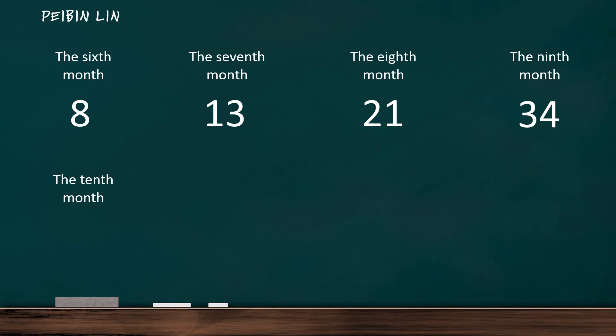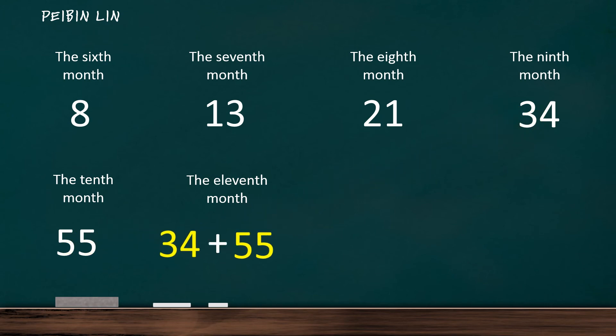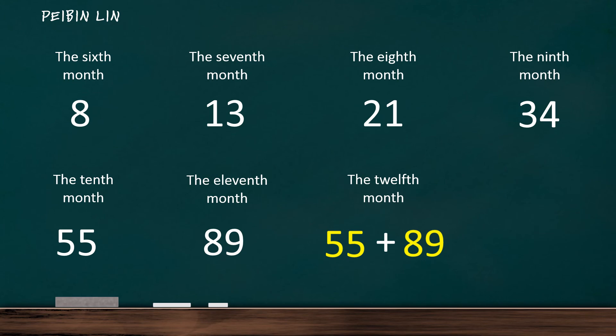At month 10, the total pairs of rabbits are equal to 21 plus 34, which is equal to 55. At month 11, the total pairs of rabbits are equal to 34 plus 55, which is equal to 89. At month 12, the total pairs of rabbits are equal to 55 plus 89, which is equal to 144.